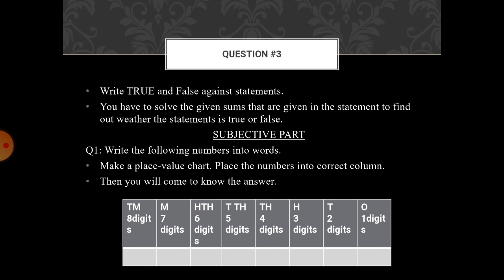Subjective part, question number 1, write the following numbers into words. Make a place value chart. Place each number in the correct column from right to left. Then you will come to know the answer. I have shown you one place value chart. What you have to do? Simple, put all the digits from right to left. Then you will come to know the answer in English. Then write it.